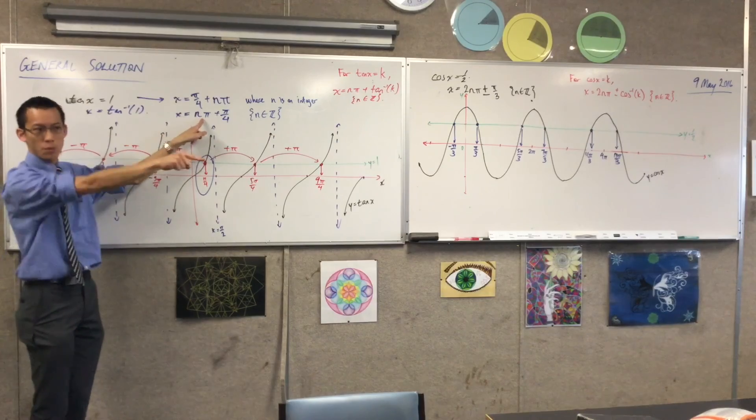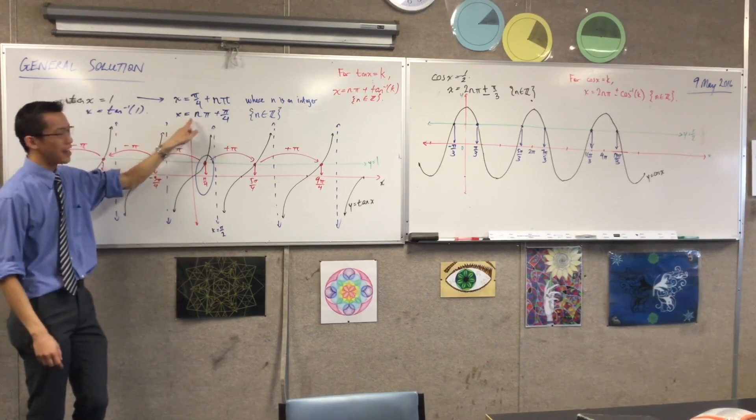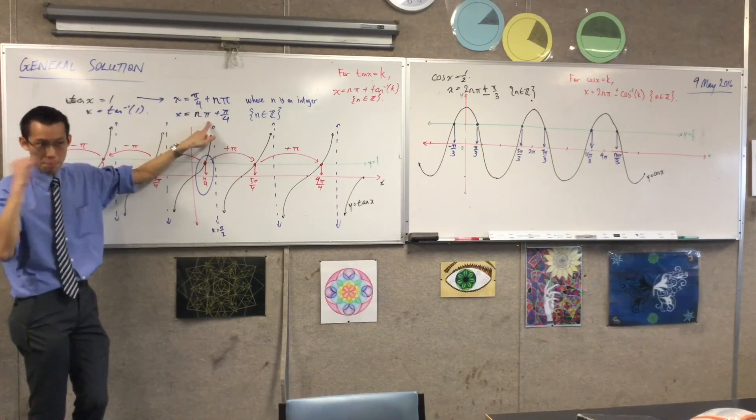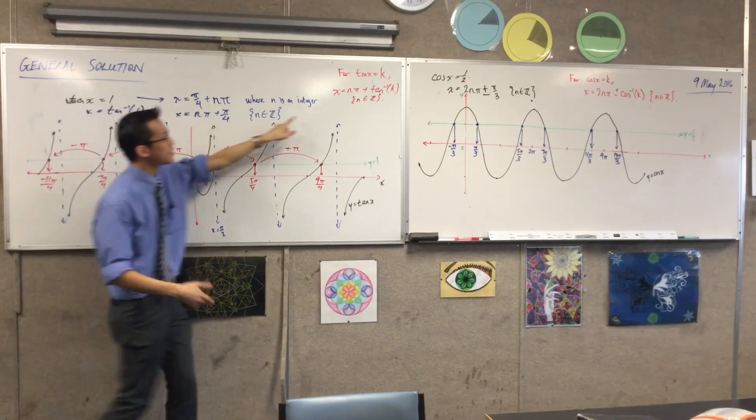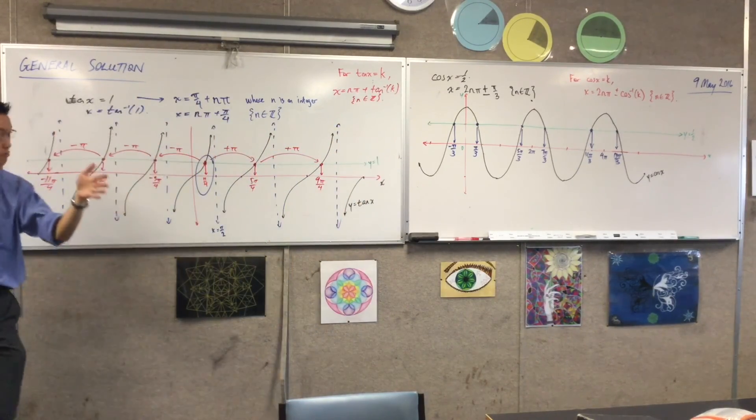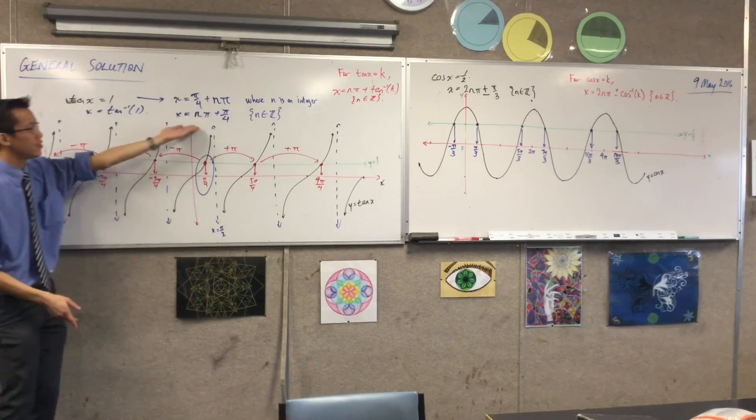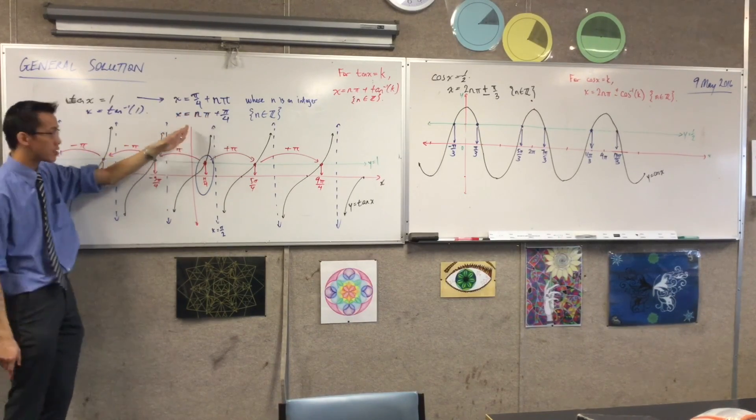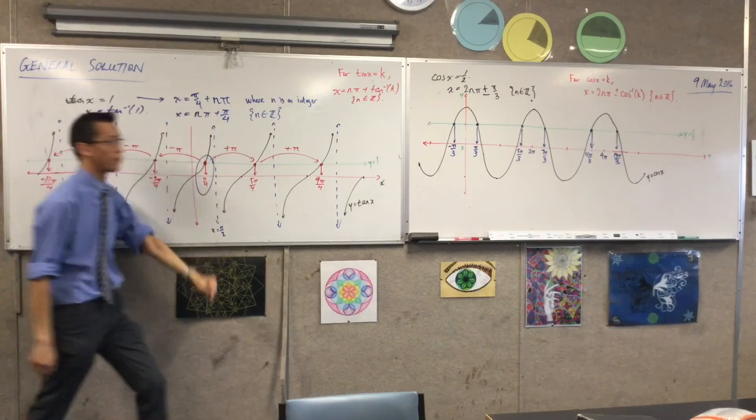If I were solving tan x equals negative 1, instead of going from nπ and going forward π/4, I'm just going to go nπ backwards π/4, which is exactly what tan inverse does, right? Tan inverse of negative 1, it has the right range. It's just going to hand you negative π/4. So, the solution will be nπ minus π/4.